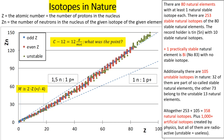The second isotope of bismuth makes up approximately 100% of element bismuth, but is much less radioactive than the first one. We should consider later whether we can really call bismuth a practically stable element.